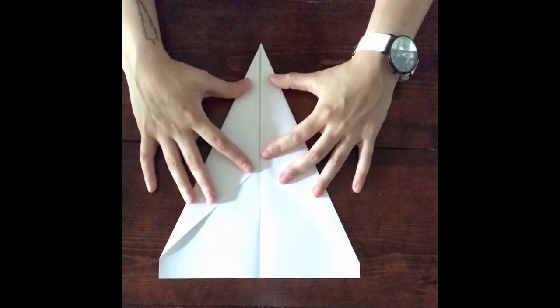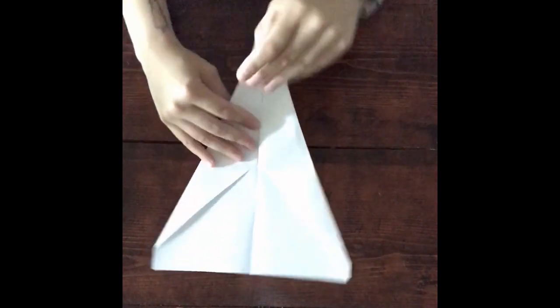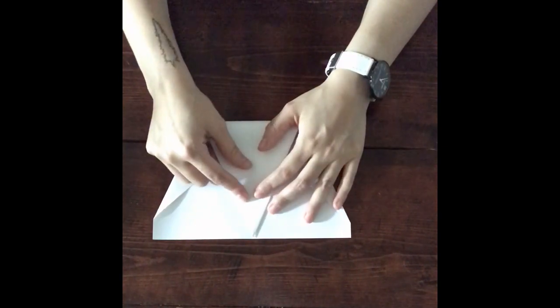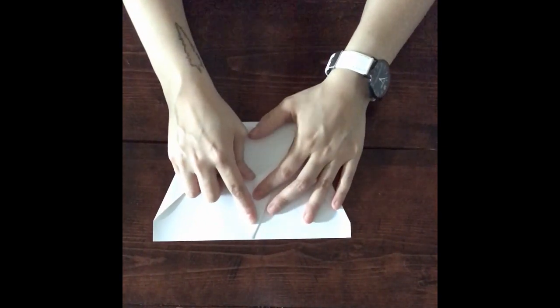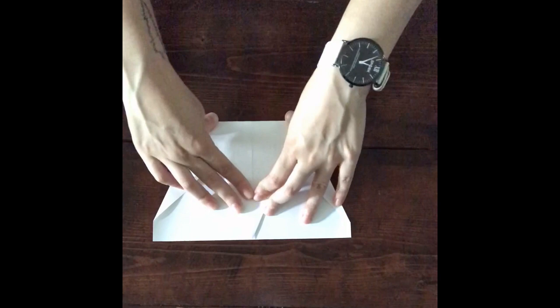The next step is where it differs from the first plane. You're going to fold the top point down to the bottom of the plane. The plane is now folded in half width wise.